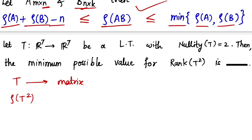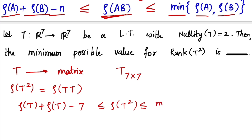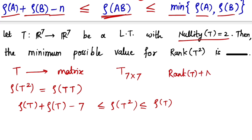We write rank of T squared as rank of T times T. Taking both A and B as T in the formula, we get rank of T plus rank of T minus n, where n equals 7 since T is a 7 by 7 matrix. So: 2 times rank of T minus 7 is less than or equal to rank of T squared, which is less than or equal to rank of T.